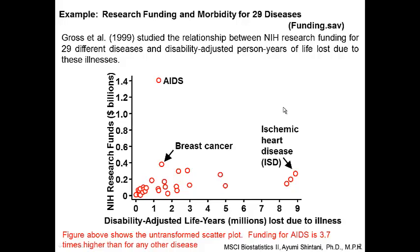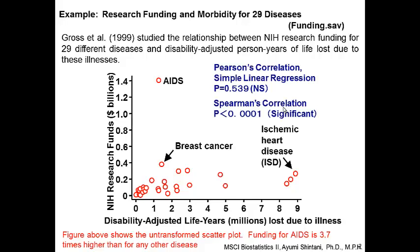This data involves two continuous variables, so the analysis of choice is Pearson's correlation coefficient. Pearson's correlation provides a p-value similar to simple linear regression. If you do either of these analyses, the p-value is 0.539 — clearly not significant. However, if you do Spearman's correlation analysis, the p-value is less than 0.0001, which is highly significant.